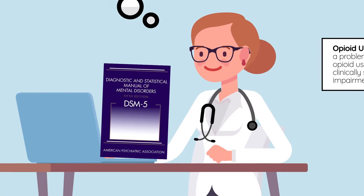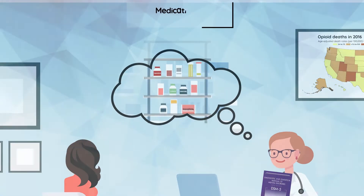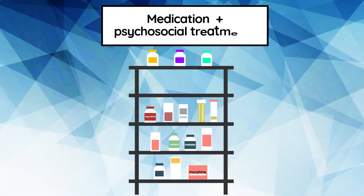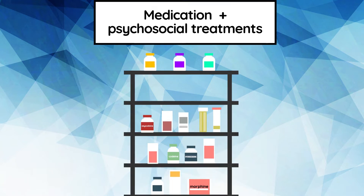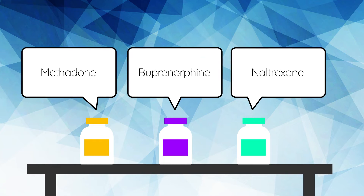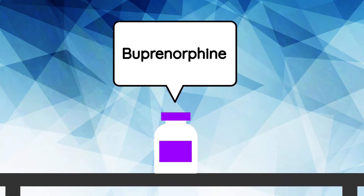Patients with OUD need ongoing care. The use of medication, combined with psychosocial treatments, is the most effective treatment modality. While there are three approved and effective medications to treat OUD, this tutorial will focus on sublingual buprenorphine in the treatment of adults with opioid use disorder.